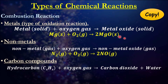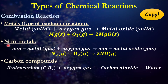Let's look at the three different types of combustion reactions you can get. One is the combustion reaction of a metal. A metal exposed to oxygen will make a metal oxide. In this example, magnesium reacts with oxygen gas and you get magnesium oxide. The next one is a non-metal. Non-metals when they react with oxygen will produce a non-metal oxide. In this case, nitrogen reacts with oxygen to produce nitrogen monoxide.